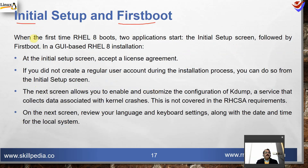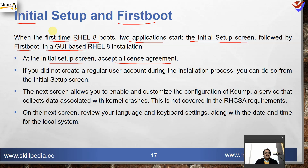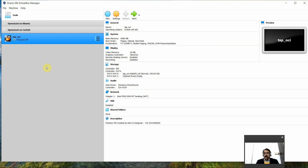When RHEL 8 boots for the first time, two applications start: initial setup and first boot. In a GUI-based installation, you accept the license agreement at the initial setup screen. If you did not create a regular user account during installation, you can do so here. The next screen lets you enable and customize kdump, a service that collects data associated with kernel crashes — not required for RHCE but good to have. You also review language, keyboard settings, date and time, and locale settings.